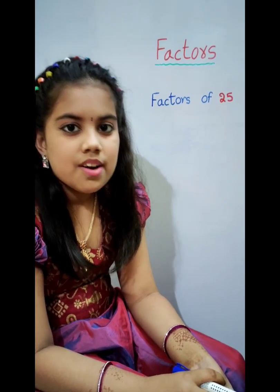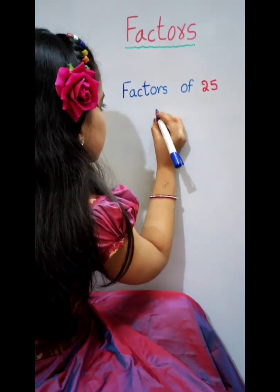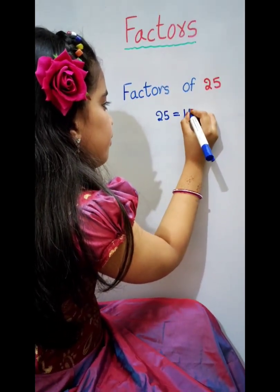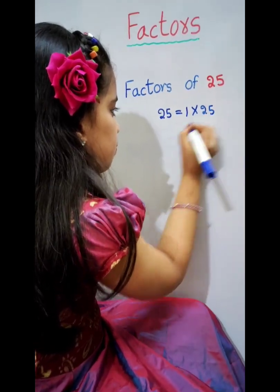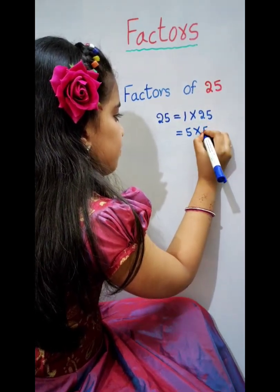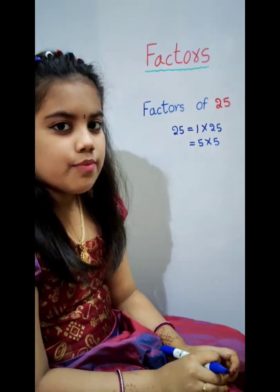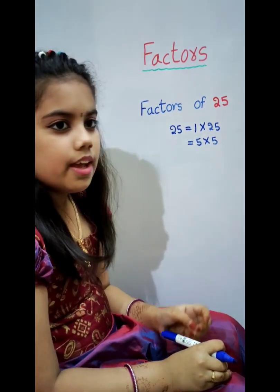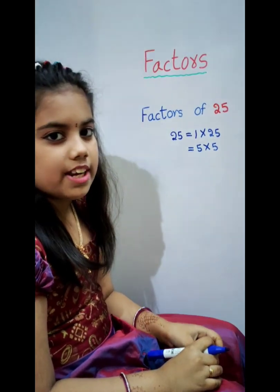Next example: find the factors of 25. One times 25 equals 25. Five times 5 equals 25. The factors of 25 are 1, 5, 25. If the number comes more than one time, we can write it only one time.